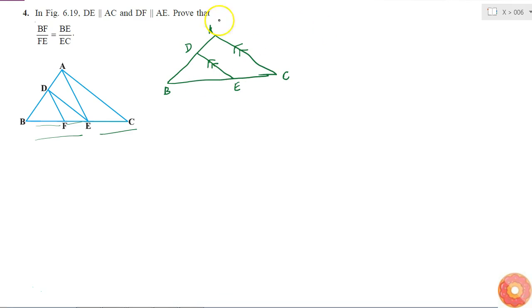So what can I say? If DE is parallel to AC, then BD by BA is equal to BE by EC, right? Because we know that any line drawn parallel to one side of the triangle divides the other two sides in the same ratio. That is what I wrote in here, so this I am going to consider as my equation 1.